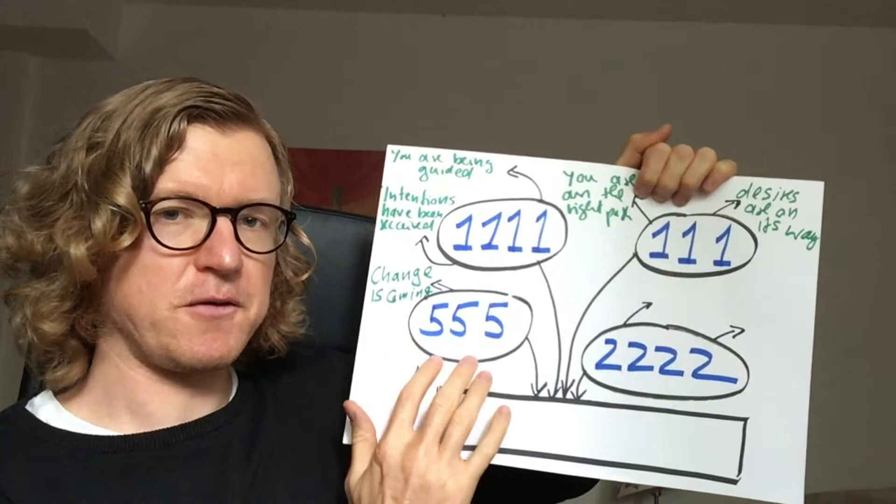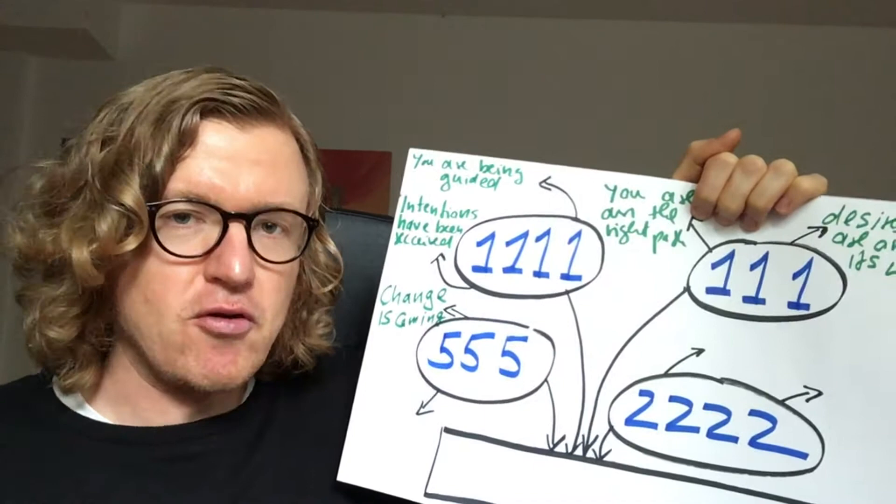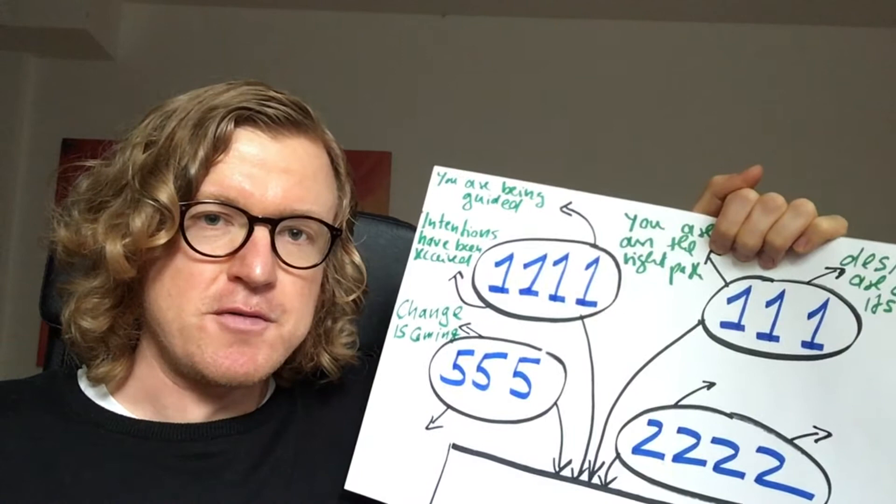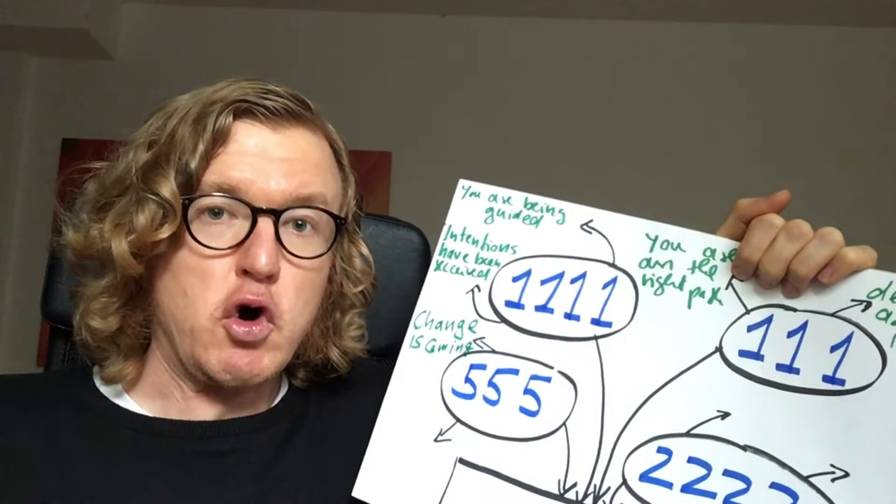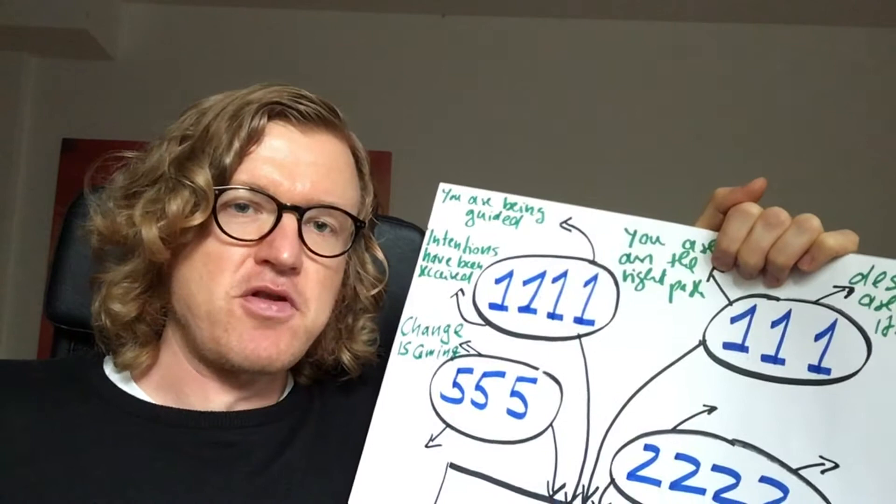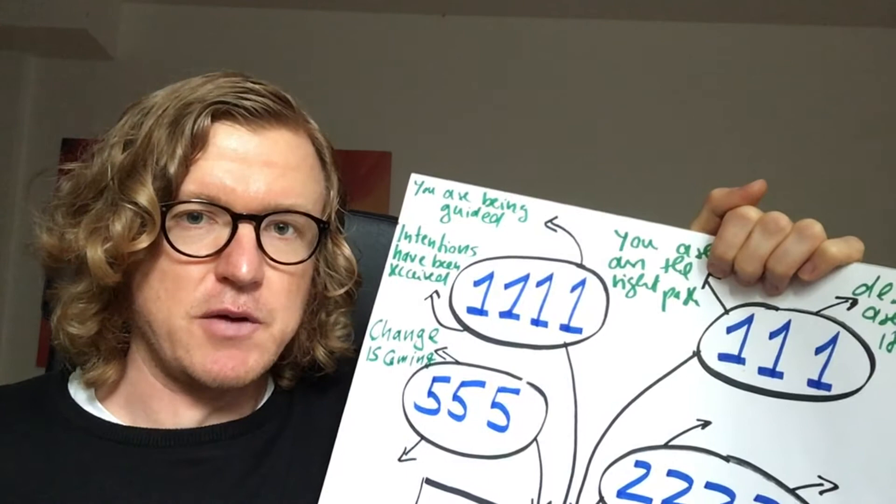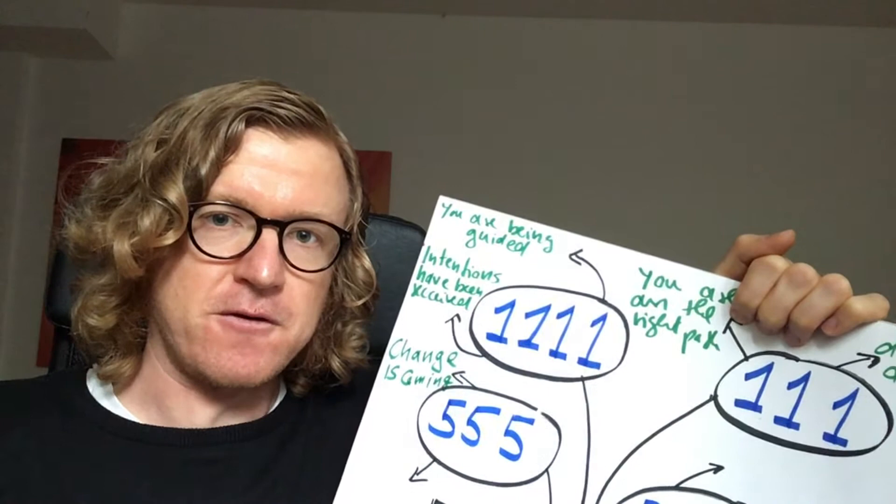One core meaning of seeing 555 is that change is coming. It's a way of notifying you to prepare and be ready to let go of certain old habits, certain old relationships, even certain old material possessions and life circumstances—because there is something new on the horizon and a fundamental shift is going to happen in your life, which could be external and also internal shifts of your personality, shifting to becoming a different new version.